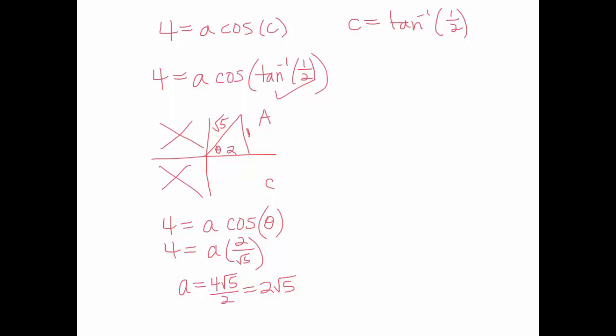So, in the end, we have y equals 2 root 5 for our a value. Sine of b, which was 3, bx, plus c. I'm just going to write tan inverse of 1 half right there. Plus d, which was 0. And that's our final answer.